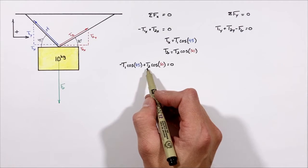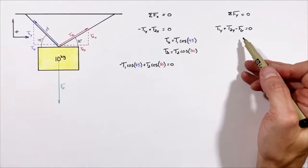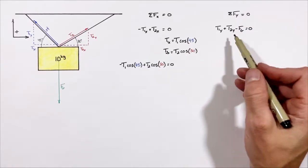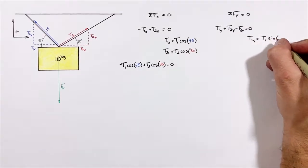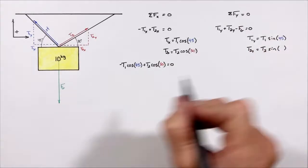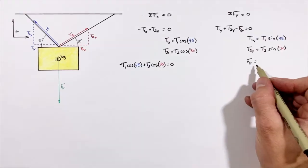You'll notice with this equation we have two unknowns, so we're not able to solve for either of them. But looking over here in the y-axis, we're going to do a similar thing to what we did in the x-axis, and that is expand out these two terms.